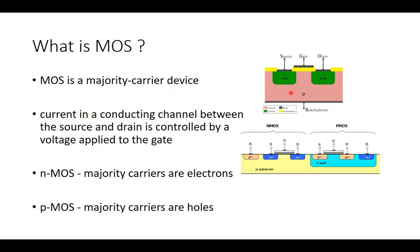You can see a structure of a MOS transistor shown here. A P-type semiconductor is acting as the body, substrate, or bulk of the device. In the bulk of the device, we have two doped regions — N+ and N+ — one forms the source, another forms the drain. On top of that, yellow shows the oxide, and on top of that, the black shows another terminal called the gate.